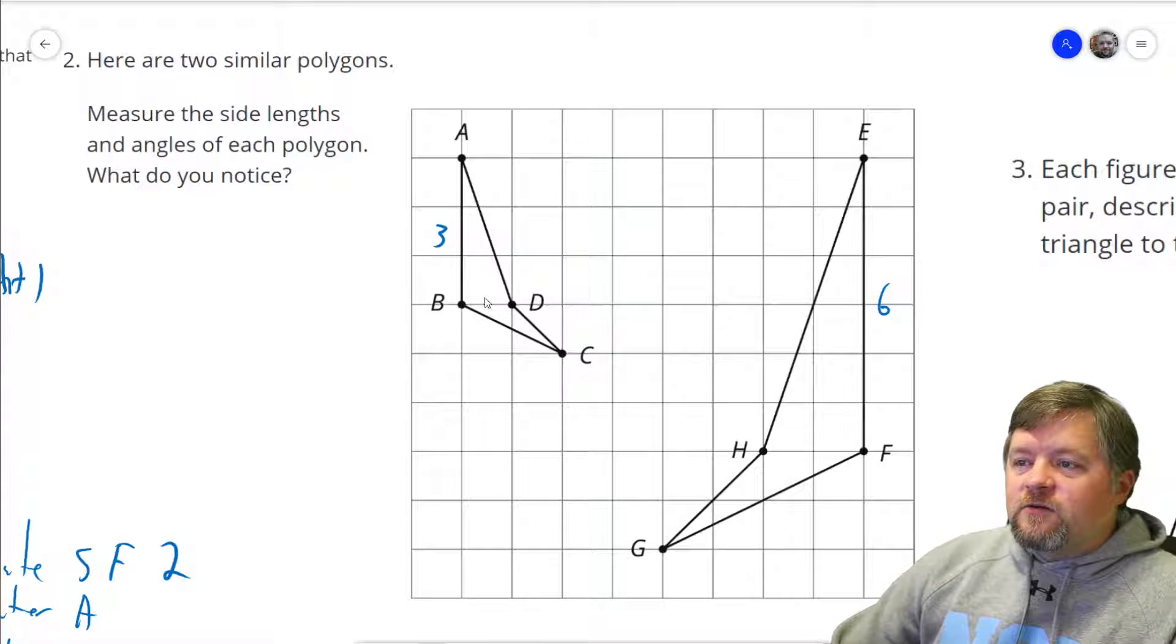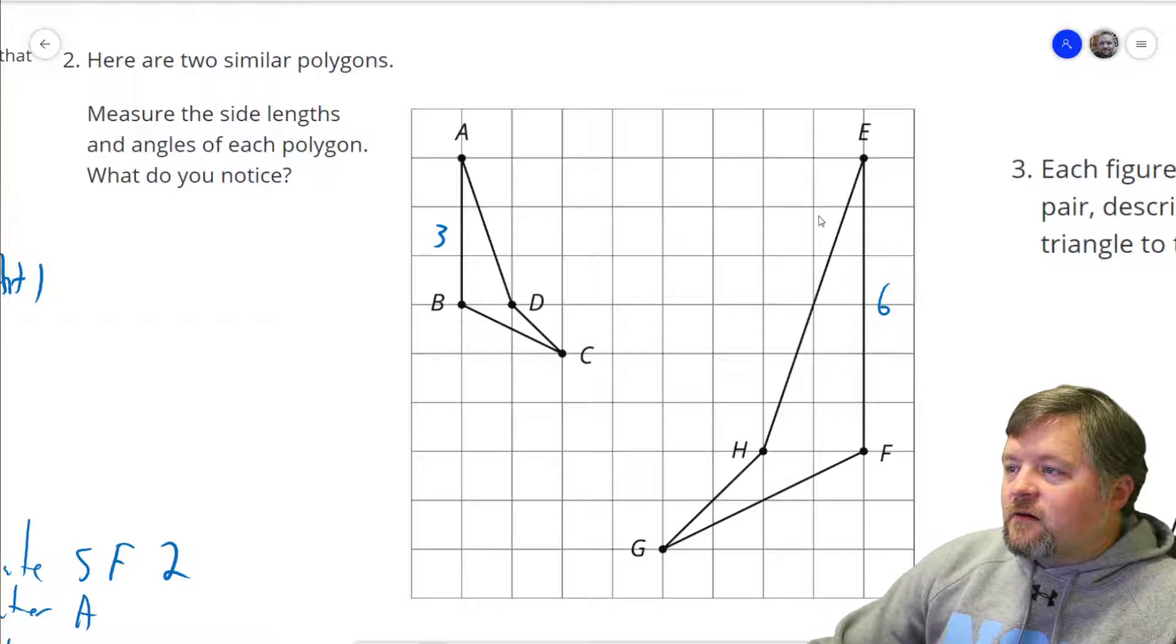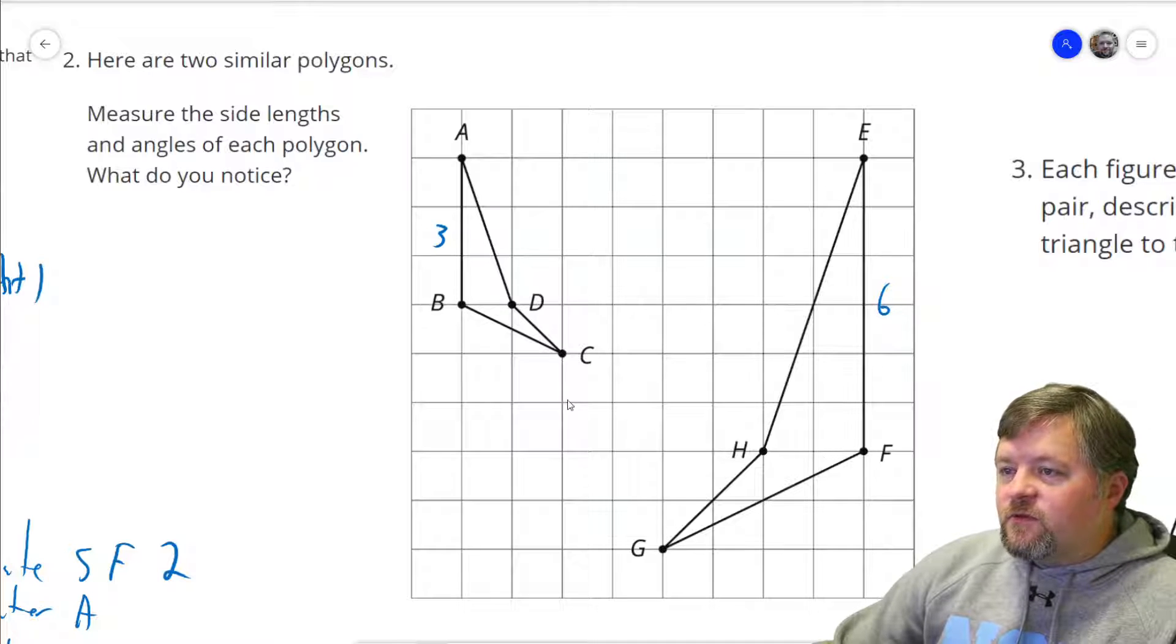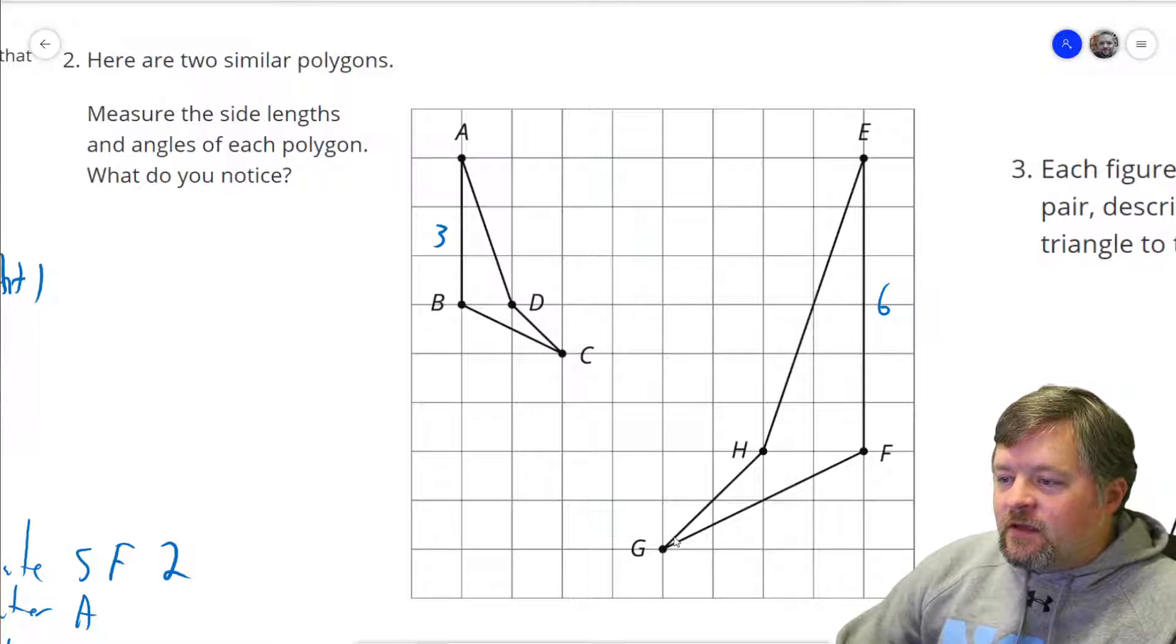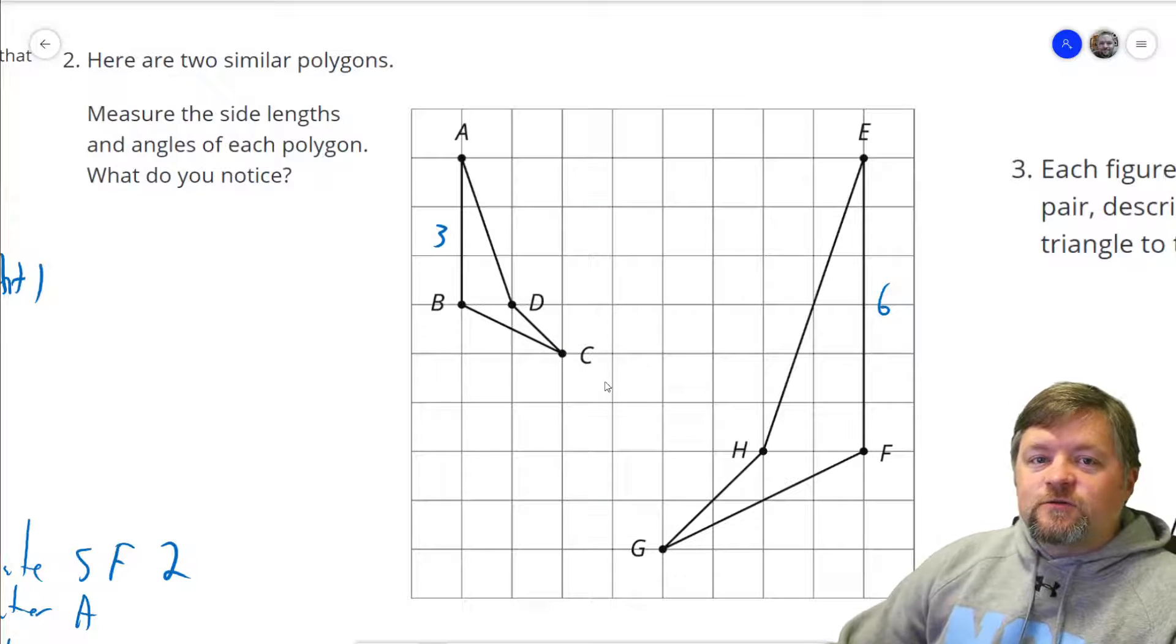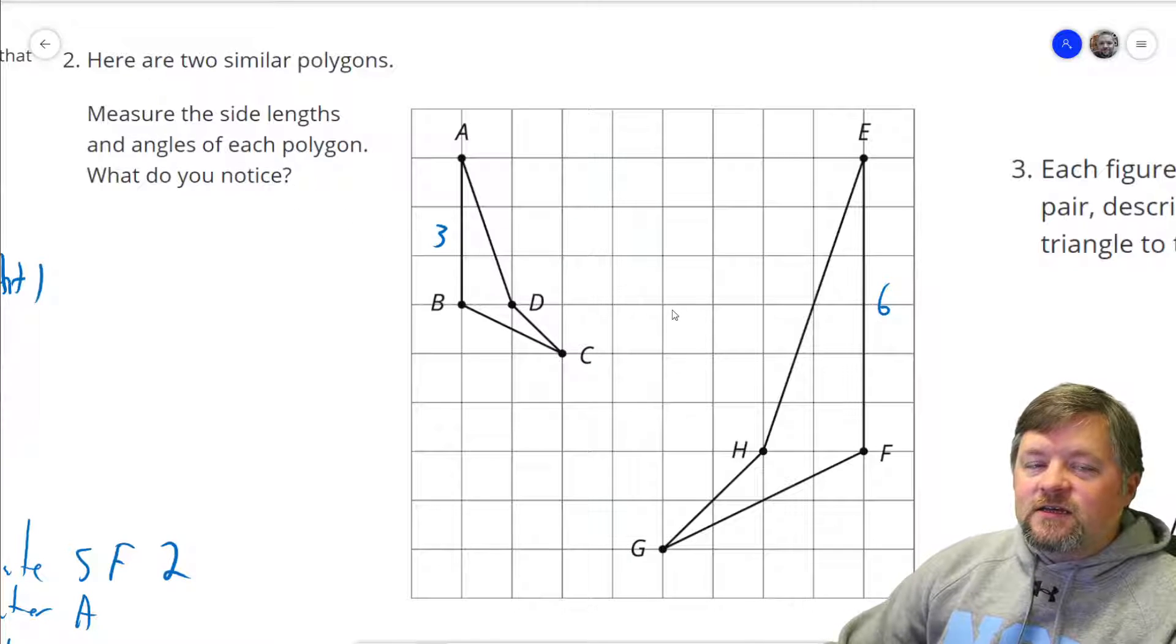So what do we notice? Oh, angles. Angle A and angle E, will those look like the same angle? Angle B and angle F, will those seem to be the same? Unfortunately I don't have a nice protractor to put on here, but check these with your protractor and I bet you will find matching angles, but all the side lengths are doubled.